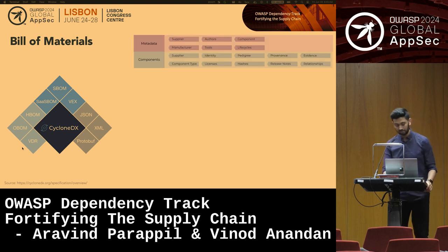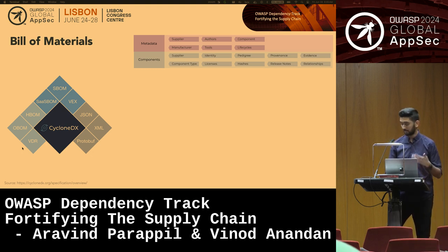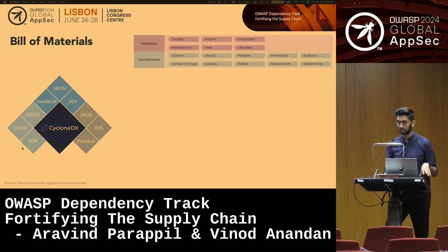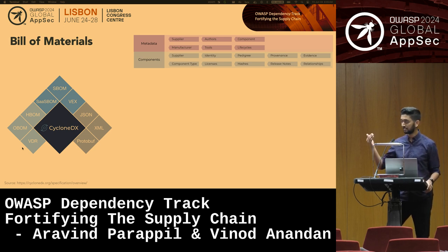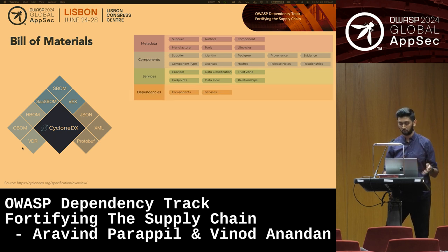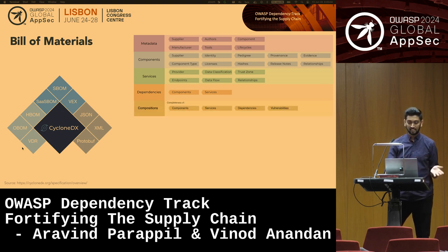To give a quick overview: CycloneDX is a standard spec that can be shared in JSON, XML, or Protobuf formats. It has sections including metadata — who created the CycloneDX SBOM, who's the intended supplier, the manufacturer — and then the actual components themselves: where the component is present, the evidence, the services such as which external API calls you're using and what the endpoints are, and the relationships between these components and services.